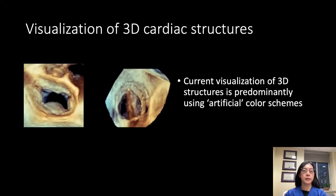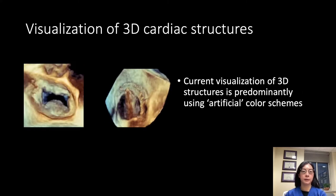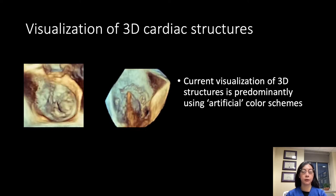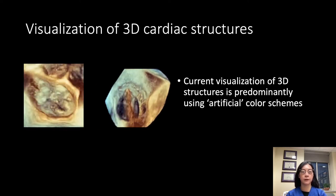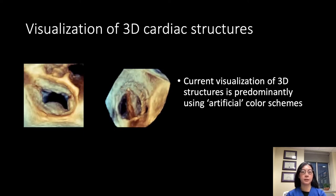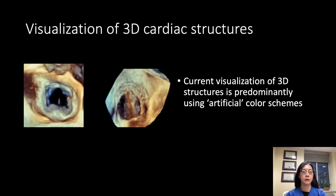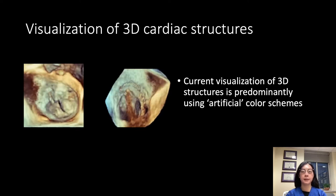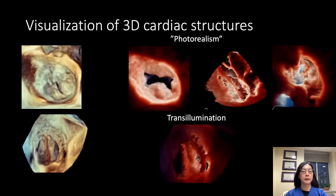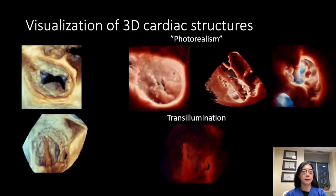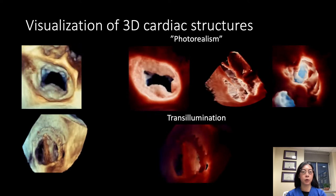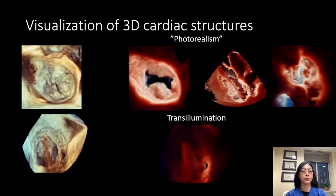Visualization of 3D cardiac structures has greatly been improved by the use of 3D echocardiography, because it allows us, particularly in the mitral valve, to see structures en face and in a kind of 3D space. However, the problem with current visualization of 3D structures is predominantly using these artificial colors and separated tone schemes. There have been developments that allow us to actually see structures in a more real-life way — they call this photorealism.